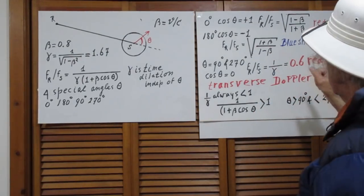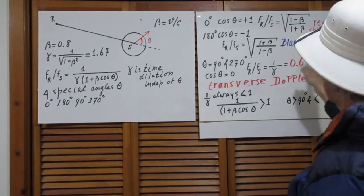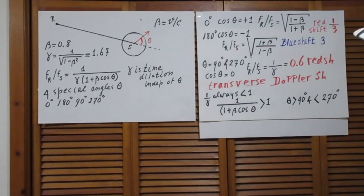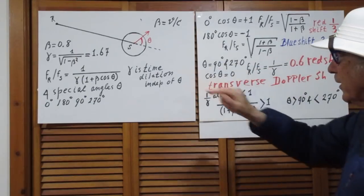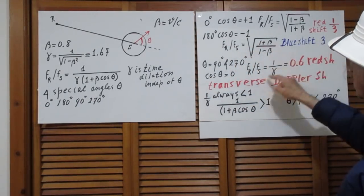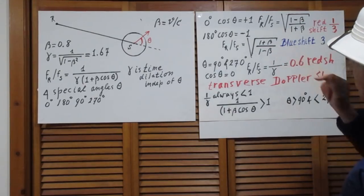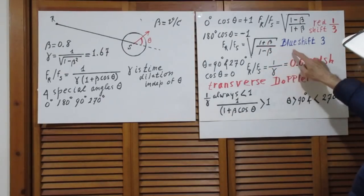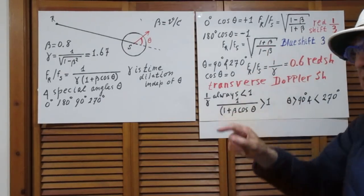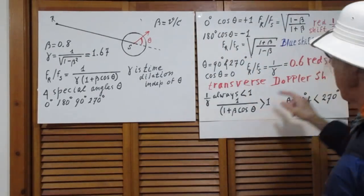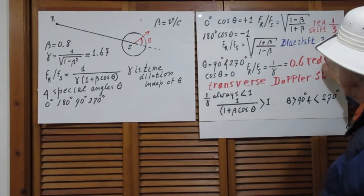Let's take 180 degrees. So the cosine is minus one. Again with a little bit of algebra you can show that the ratio now is the square root of one plus beta divided by one minus beta. So now this is larger than one. So the frequency that you receive is higher than the frequency emitted, and so we call this blue shift. It's three times higher.